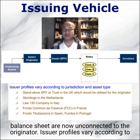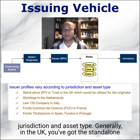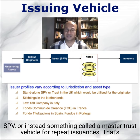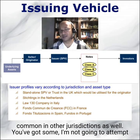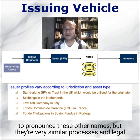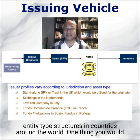Issuer profiles vary according to jurisdiction and asset type. Generally in the UK you've got the standalone SPV or something called a master trust vehicle for repeat issuances. That's common in other jurisdictions as well. There are very similar processes and legal entity type structures in countries around the world.